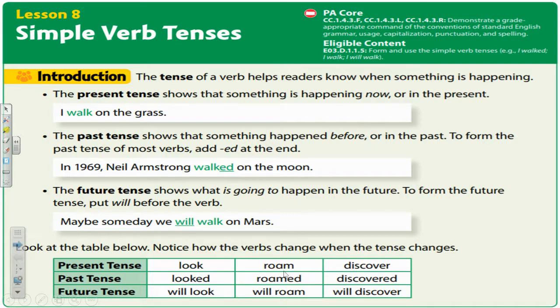Will look. In the middle column, the verb is roam. In the present tense, it's simply roam. If you want to say that you roamed the streets last year, you put it in past tense with that -ed ending. And if you say that you will do it in the future, add will in front: will roam. The last verb here is discover. Discover is in the present, discovered with -ed is in the past, and will discover is in the future.